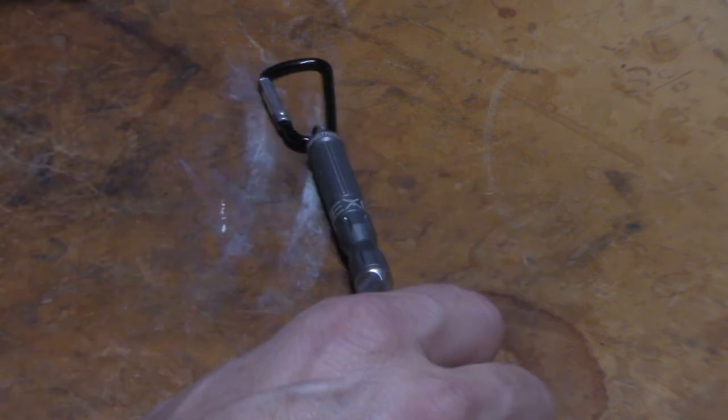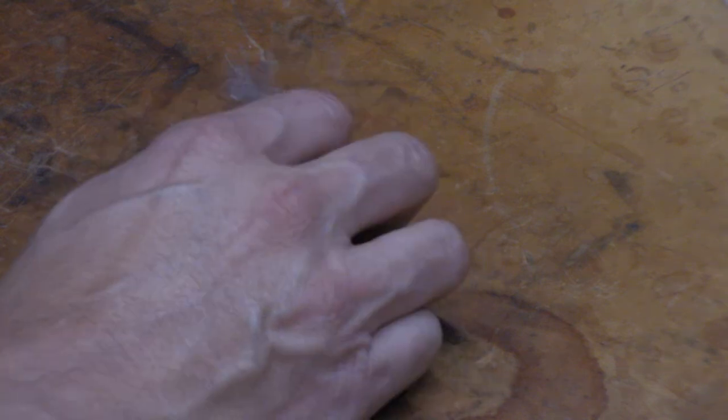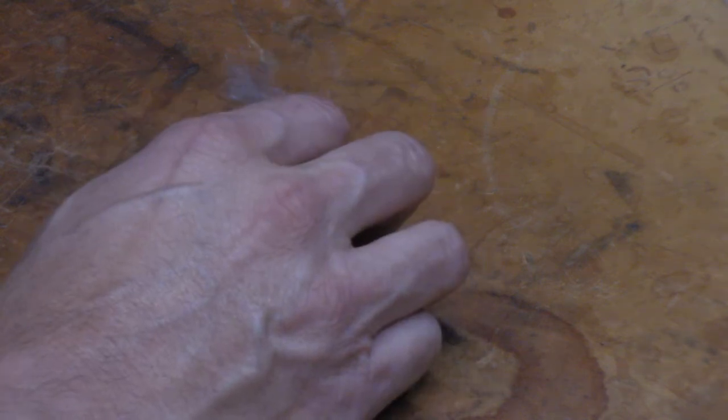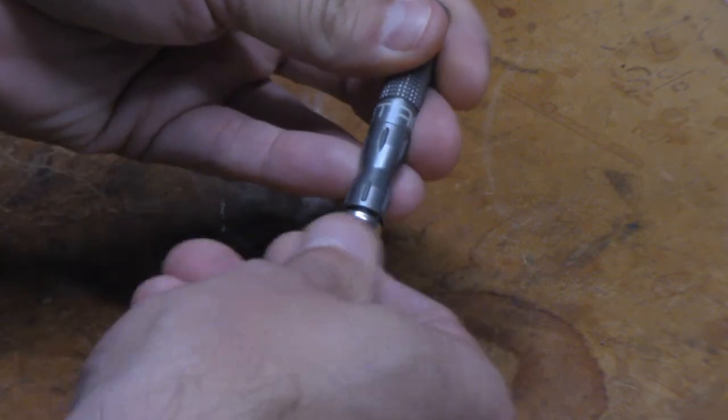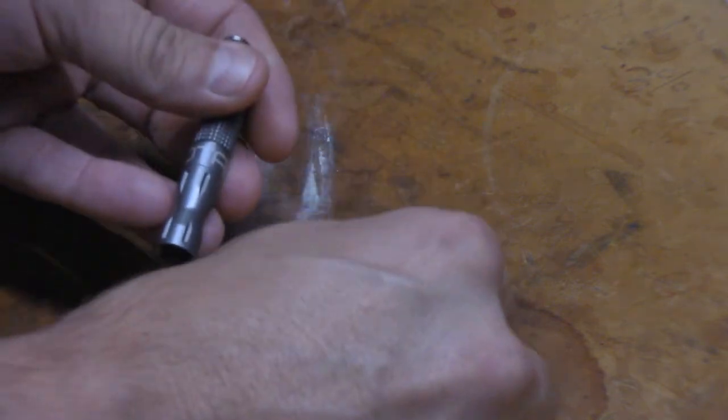Now let's take a look at this fire steel, this all-in-one. This carabiner I put on it—they actually supply you with a piece of rope. Since we got it all zoomed in right now, let's take it apart and look at the parts and pieces.